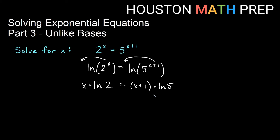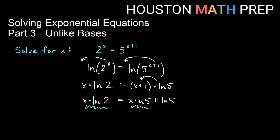We want all x terms on one side and all non-x terms on the other. The ln 5 is outside a binomial, so we distribute it first: x times ln 2 equals x times ln 5 plus 1 times ln 5, which stays as ln 5. Now we can see the x terms and non-x terms clearly. Moving the x times ln 5 to the left side gives x times ln 2 minus x times ln 5 equals ln 5.